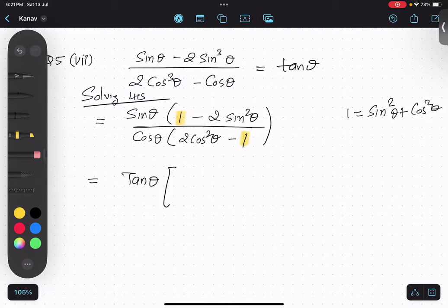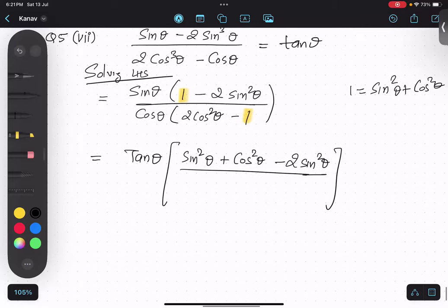Okay, tan. Make sense? Inside, I am solving. So, sin square theta plus cos square theta minus minus 2 sin square theta. Very good. And denominator: 2 cos square theta minus sin square theta plus cos square theta.